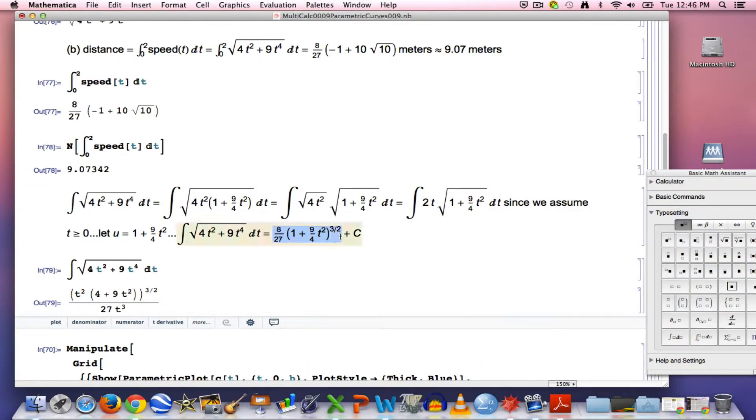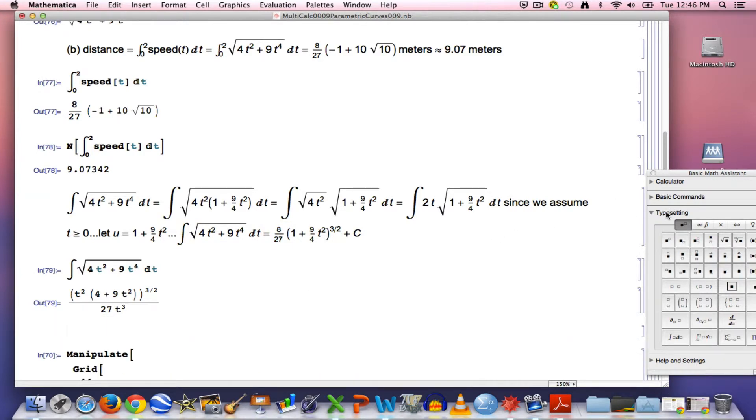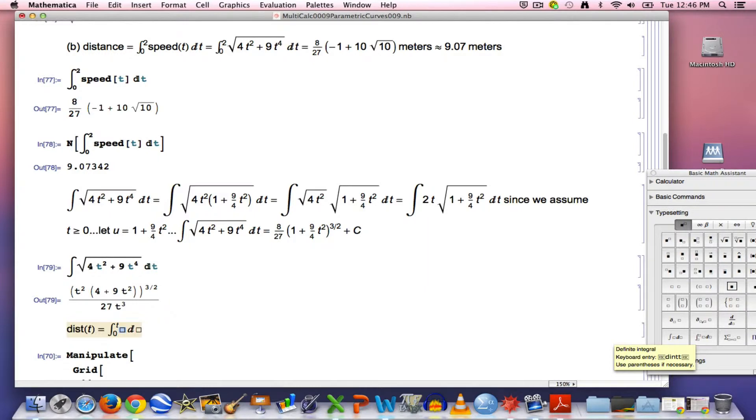So this is effectively giving you the same answer. But this expression that you see here is not the speed, or excuse me, not the distance traveled. What is the distance traveled? I could call it dist of t. It is related to this one. If you use this antiderivative along with the fundamental theorem of calculus, treating the upper limit of the integral as a variable, you're going to get the distance traveled, but you have to plug in the upper limit and then subtract what you get when you plug in the lower limit.